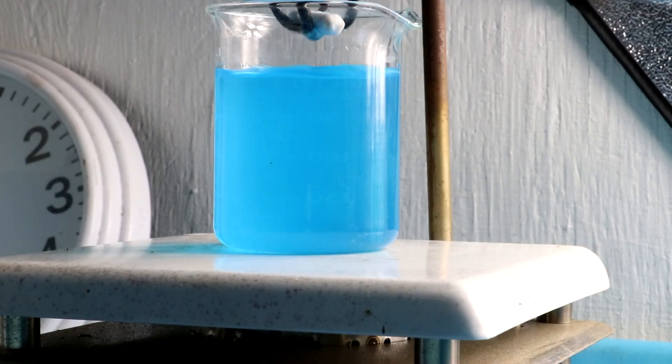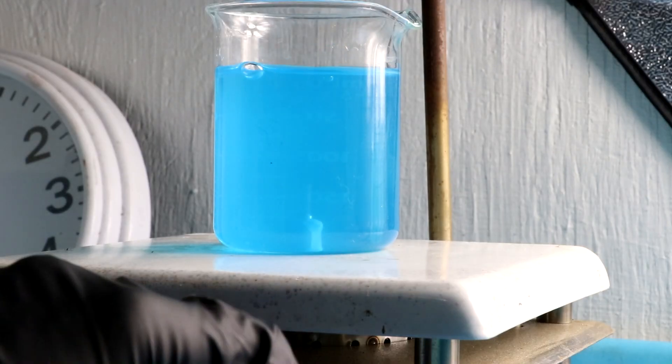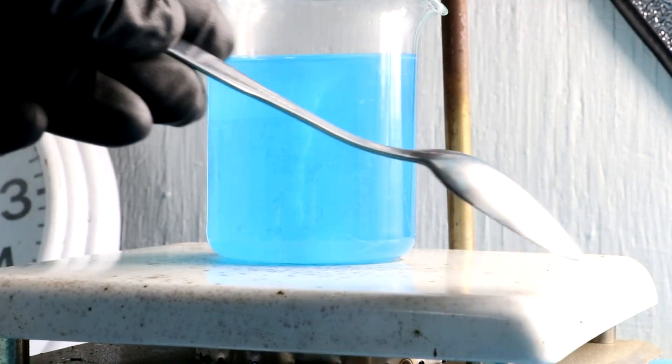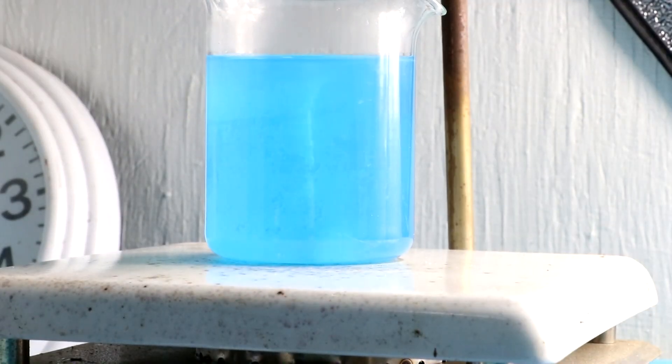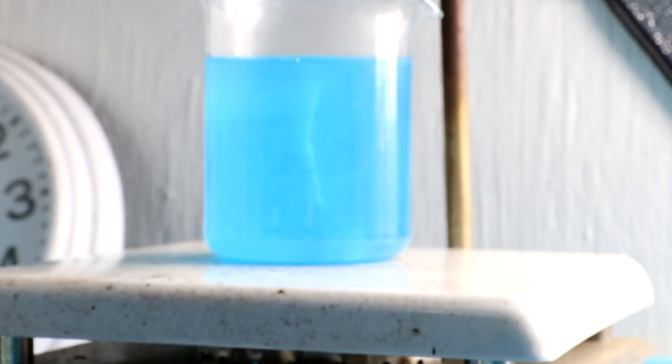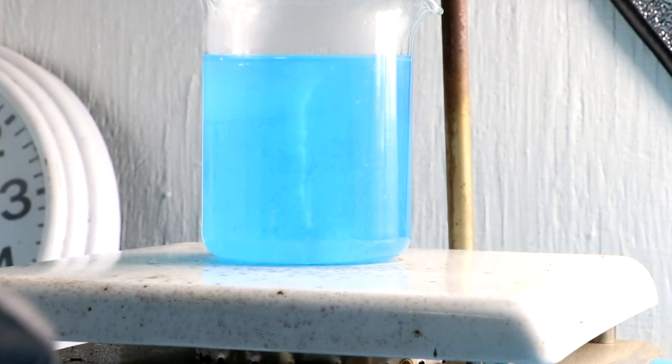Apparently this stir bar is too big. There we go. So now we have a solution of copper sulfate. This is copper which has given two electrons to the sulfate ion to form a water-soluble compound. This is copper in the plus two oxidation state.